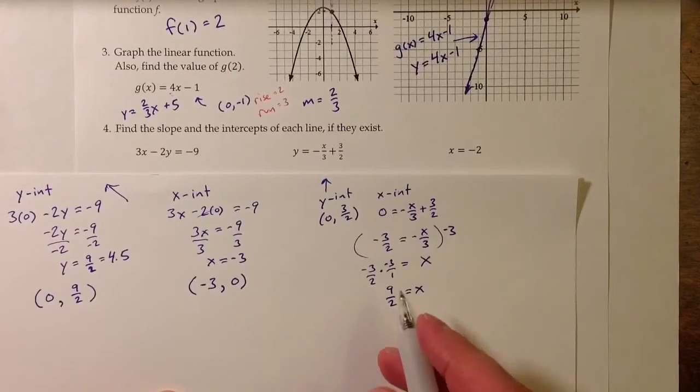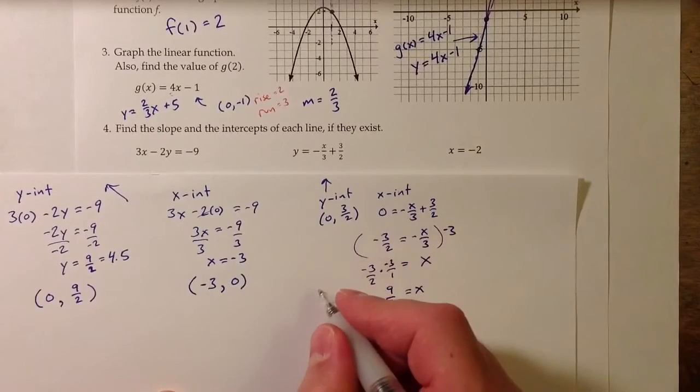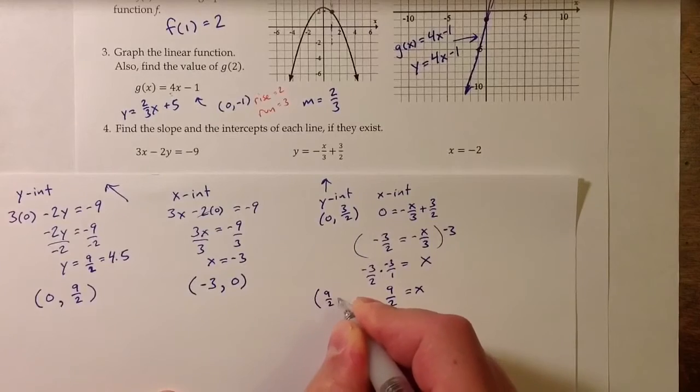This is the x-value of the x-intercept. So the actual x-intercept is 9 halves, comma 0.